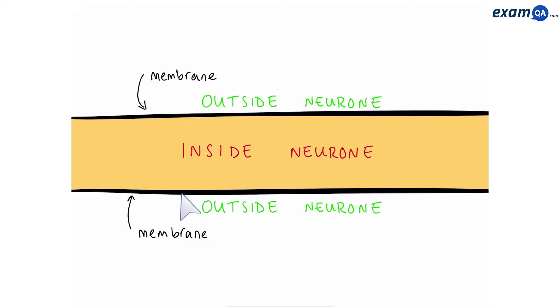Okay, so we've zoomed into the neuron. So here's inside the neuron, and this area represents outside the neuron. That means these black lines represent the cell membrane.